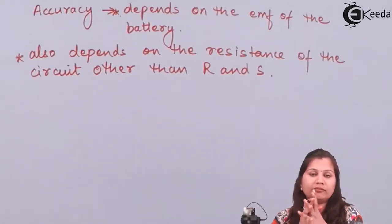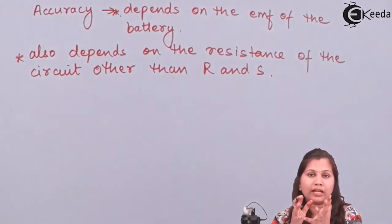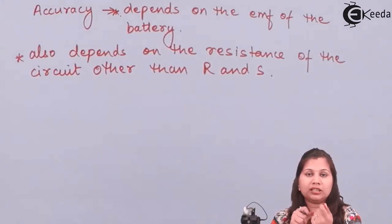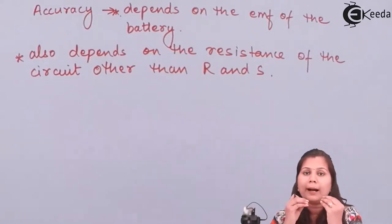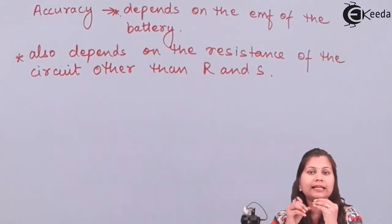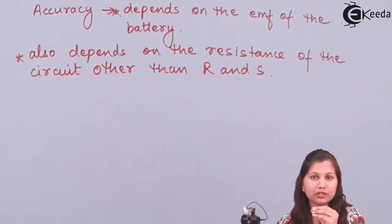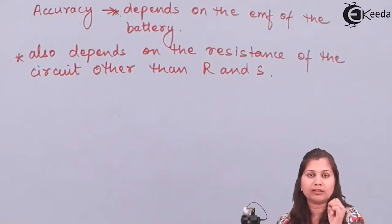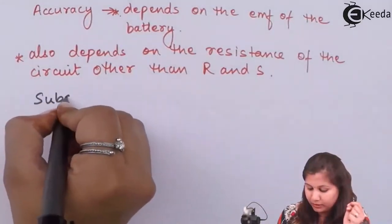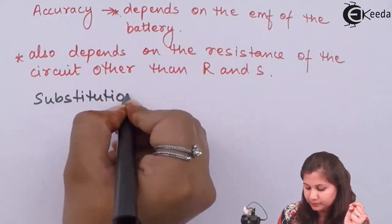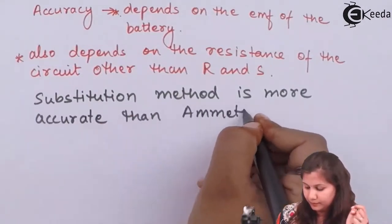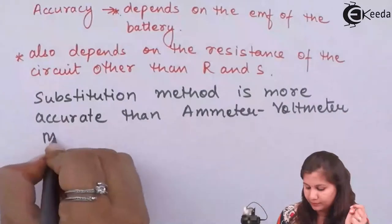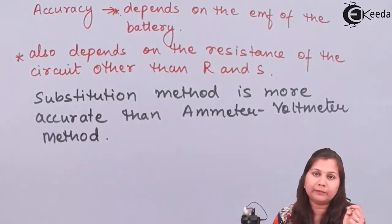Practically, we don't have ammeters with internal resistance of zero or voltmeters with internal resistance of infinite — practically it is impossible. So the ammeter-voltmeter method gives inaccurate results, whereas the substitution method gives more accurate results. Therefore, the substitution method is more accurate than the ammeter-voltmeter method.